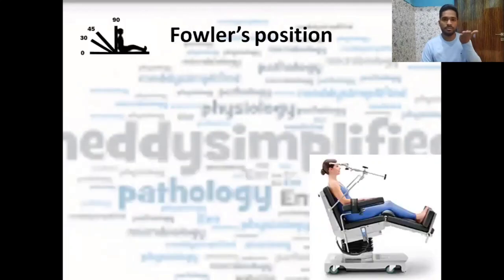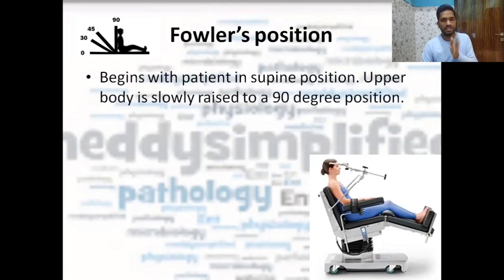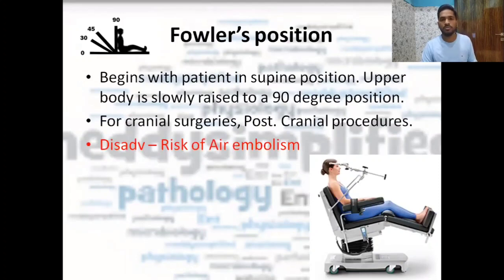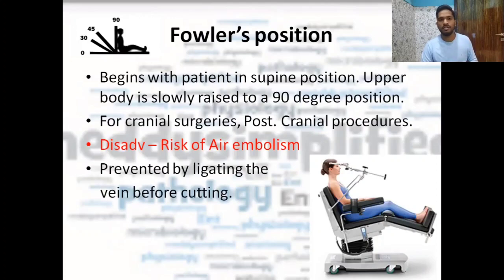There is also the Fowler's position, in which the patient is lying supine initially, and then is slowly shifted to a sitting position. The upper body is raised to a 90-degree sitting position. It is usually used for cranial surgeries — most importantly, posterior cranial fossa procedures are done in Fowler's position. A key disadvantage is that the patient has a risk of air embolism. We prevent this by ligating the vein before cutting it.